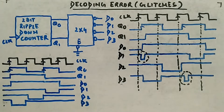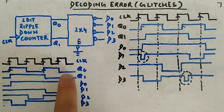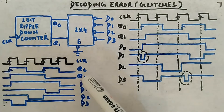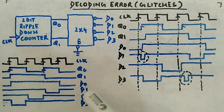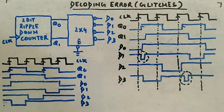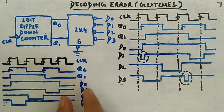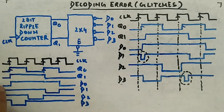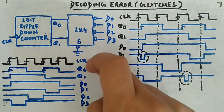When Q1 and Q0 are 00 — which is here and here — D0 becomes zero and at all other times it is one. When Q1 Q0 is 01, D1 is zero and the rest is one. When it is 10, D2 is zero and the rest is one. When it is 11, D3 is zero and the rest is one. They activate at different times and do not overlap — that is the ideal expected output.